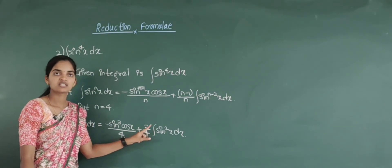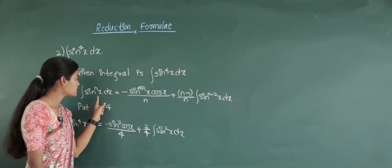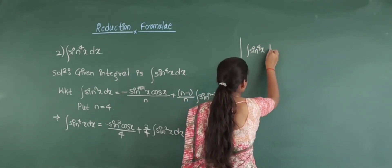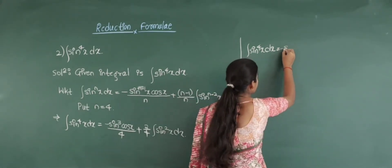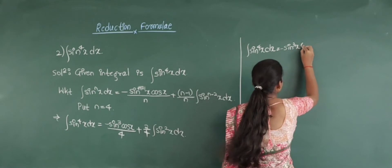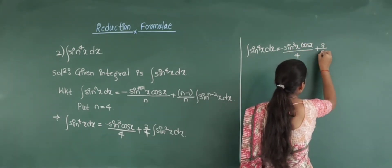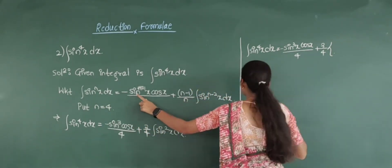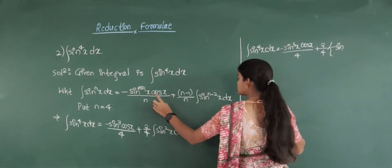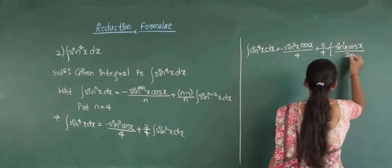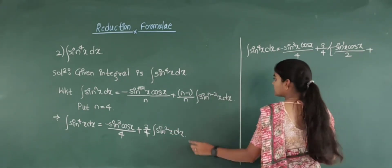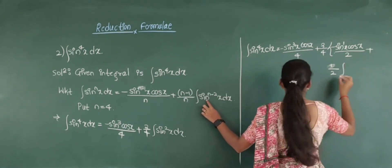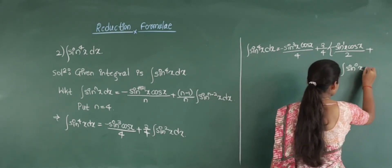Again, for this integral we will use the reduction formulae — that is, for the sin square integral we will substitute n equal to 2 in this formula. So integration of sin raised to 4 x into dx is equal to minus sin cube x into cos x divided by 4, plus 3 by 4 — taking a bracket — and now substituting n equal to 2: minus sin raised to 1 x, cos x divided by 2, plus n minus 1 means 1 divided by 2, then integration of sin raised to 2 minus 2, that is sin raised to 0 x, into dx.